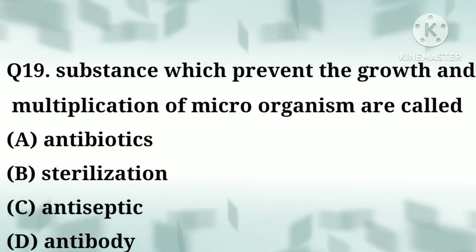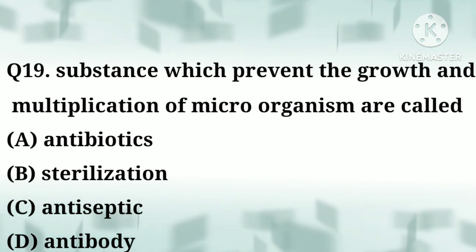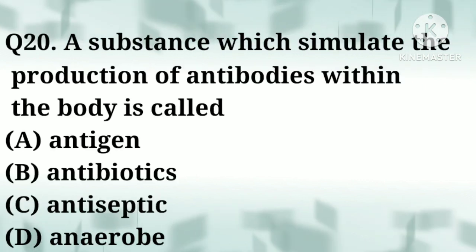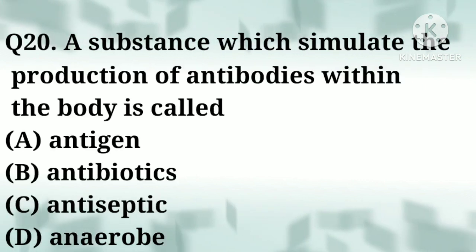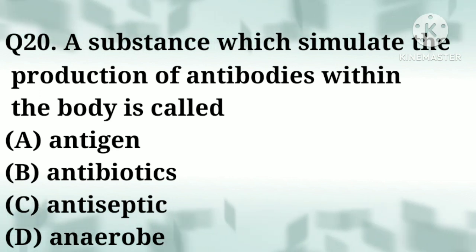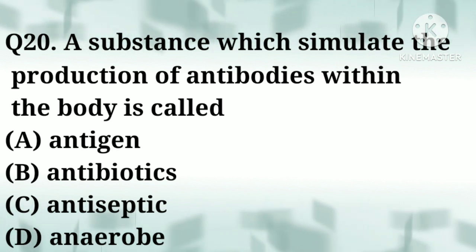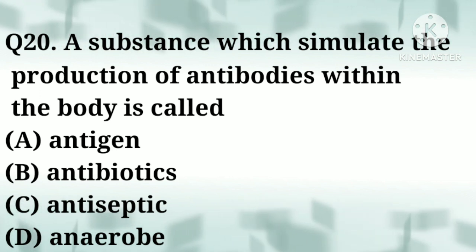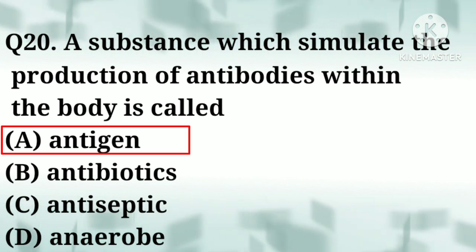Correct answer: option C, antiseptic. Question number twenty: a substance which stimulates the production of antibodies within the body is called — option A: antigen, option B: antibiotics, option C: antiseptic, option D: anaerobic. Correct answer: option A, antigen.